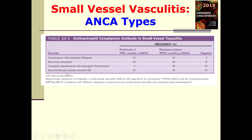For different types of small vessel vasculitis: granulomatosis with polyangiitis shows 70% Proteinase-3 ANCA, 25% Myeloperoxidase, and 5% ANCA-negative. Microscopic polyangiitis shows 40% Proteinase-3, 50% MPO, and 10% ANCA-negative. Eosinophilic granulomatosis with polyangiitis (Churg-Strauss) shows 55% ANCA-negative, 40% MPO-positive, and 5% Proteinase-3. Renal-limited pauci-immune crescentic glomerulonephritis shows 20% Proteinase-3, 70% MPO, and 10% ANCA-negative.